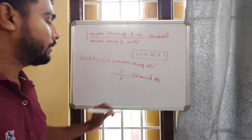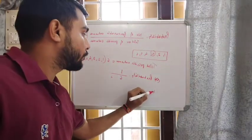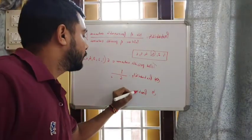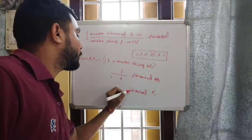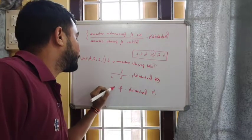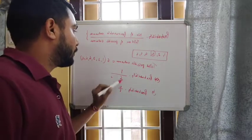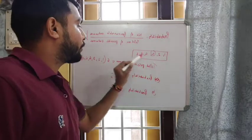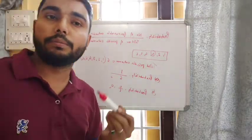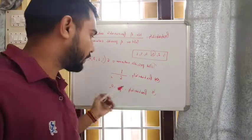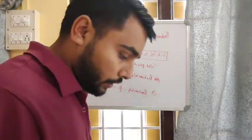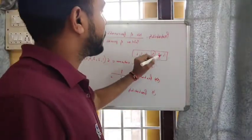For getting a seven — can you see any outcome which is seven? No. So there is no outcome in favor of seven, meaning the number of favorable outcomes is zero. Probability will be zero by six, which equals zero.